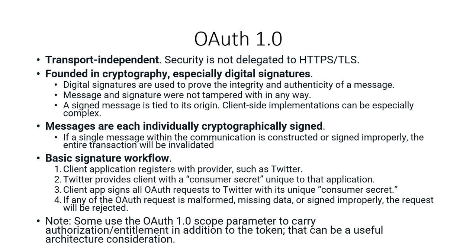OAuth 1.0 is transport independent, so it doesn't depend on any transport — that means security is not delegated to protocols like HTTPS or TLS. It is founded in cryptography, especially digital signatures, which are used to prove the integrity and authenticity of a message, ensuring the message and signature were not tampered with in any way.